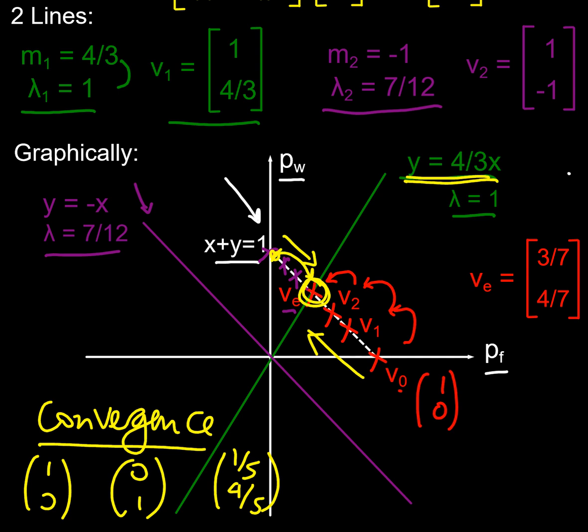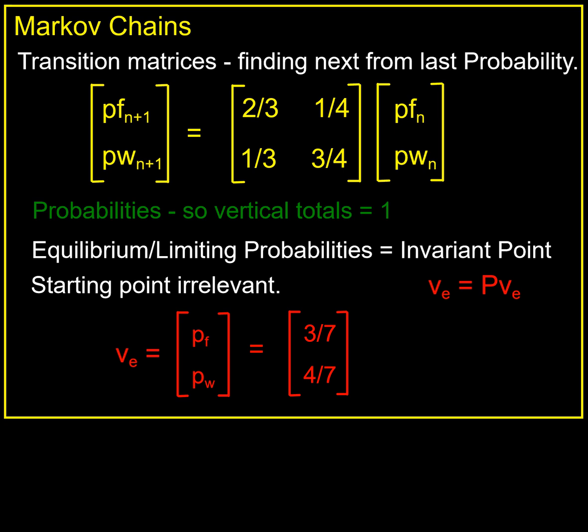So in summary, what have we got? Here's my summary page. Here's a Markov chain - it's a transition matrix with probabilities, so each of these columns the total is one. And I can find my limiting or equilibrium probability upon which this chain will converge by using the invariant point approach: that v_e must equal the probability matrix times v_e. And in this case I would have found that that invariant point was three sevenths, four sevenths - so that's three sevenths probability that it's a fine day, four sevenths that it is a wet day. And we can use this approach with Monte Carlo to solve all sorts of probability profiles and in Bayesian probability. So best of luck.